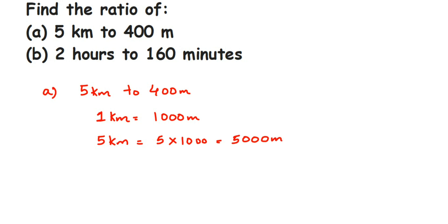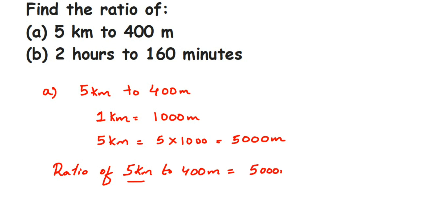Now we're going to find the ratio. The ratio of five kilometers to 400 meters will be equal to — instead of five kilometers I'll write down 5000 meters — so 5000 meters to 400 meters. Remember, whenever you're writing a ratio it has to be in reduced form. This ratio can also be written in fractional form, which is 5000 divided by 400.